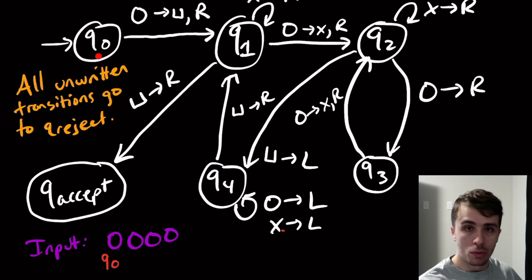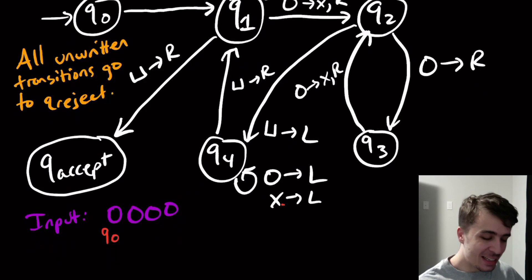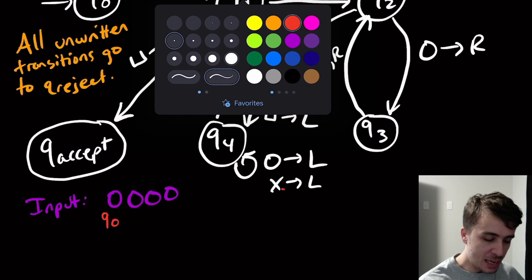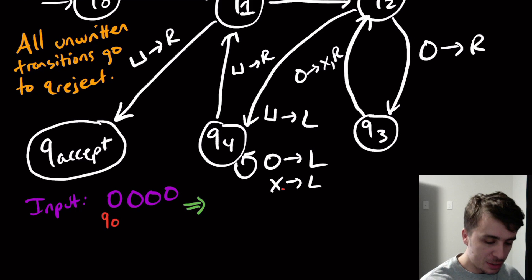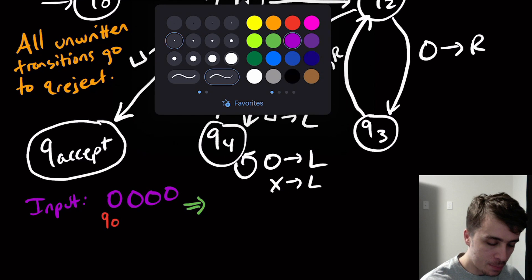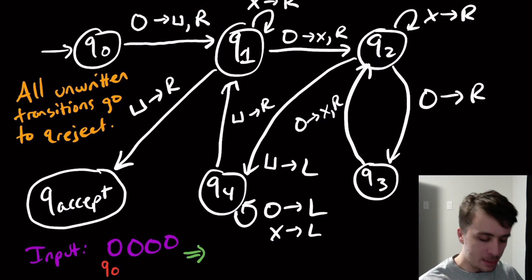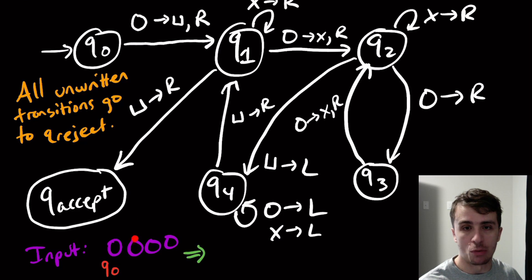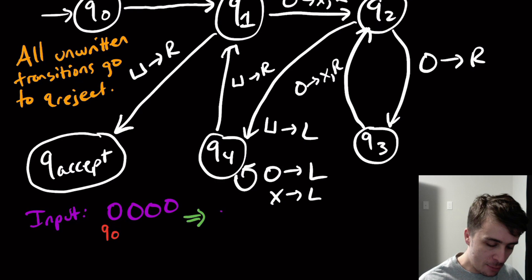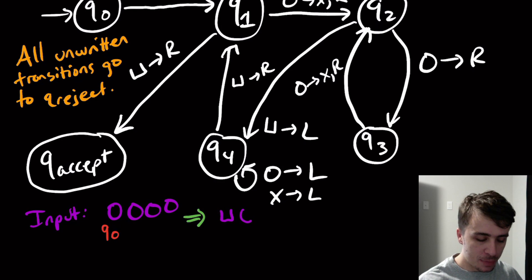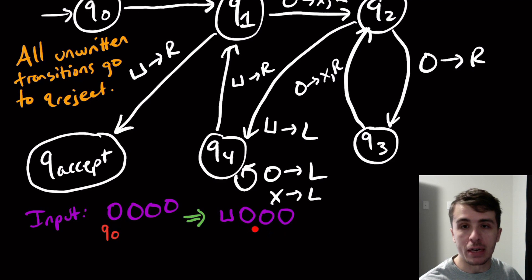We're in q0 and we see a zero on the tape — we have a transition for that. This transition changes the zero to a blank symbol and moves right. So this cell changes to a blank symbol, and the next position we look at is the second one. We're now in state q1. So the tape is: blank, then three zeros. Only the cell under the tape head could possibly change; the zeros further right have not been changed.